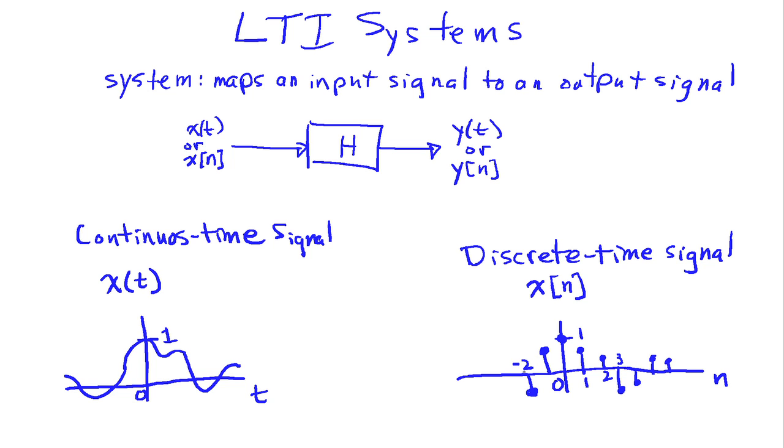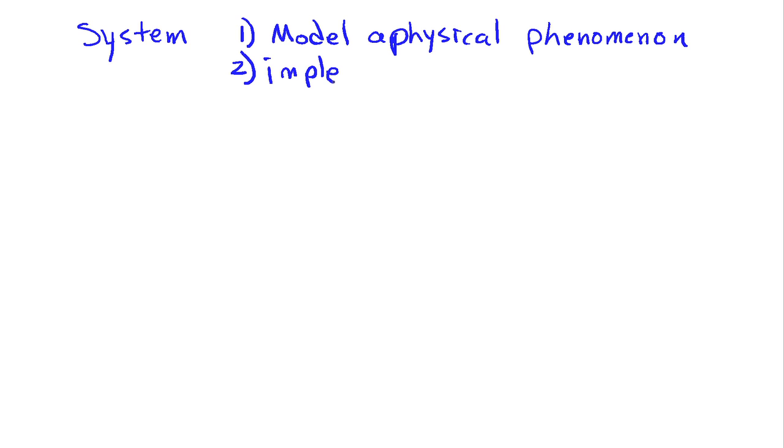Systems have two different purposes that we often use them for in signal processing. We can use a system to model a physical phenomena, and I'll give you an example of that, or we can use a system to implement some desired characteristic.